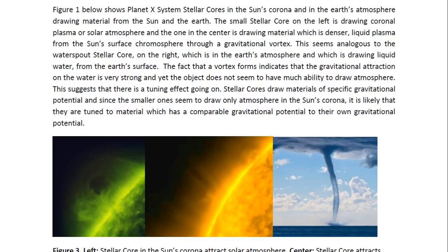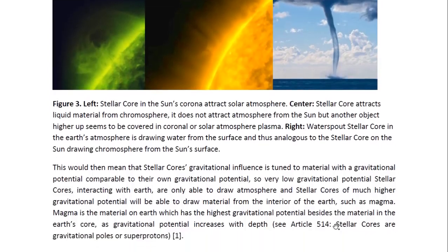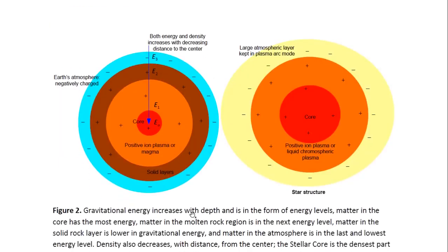Stellar cores draw material of specific gravitational potential, and since the smaller ones seem to draw only atmosphere in the Sun's corona, it is likely that they are tuned to material which has a comparable gravitational potential to their own. This would mean that stellar cores' gravitational influence is tuned to material with a gravitational potential comparable to their own. So very low gravitational potential stellar cores interacting with Earth are only able to draw atmosphere, and stellar cores of much higher gravitational potential will be able to draw material from the interior of the Earth such as magma. Magma is the material on Earth which has the highest gravitational potential besides the material in the Earth's core, as gravitational potential increases with depth. You may look at Article 514 entitled Stellar Cores or Gravitational Poles or Super Protons.